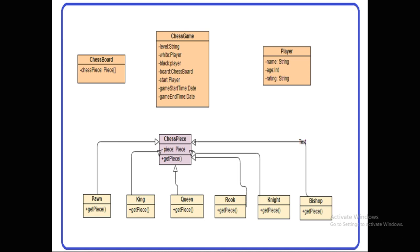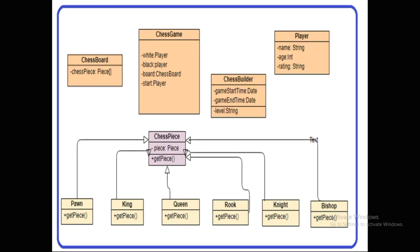In the diagram we have a ChessGame class which has many parameters: chess level, white player, black player, chess board, the player which will start the game, game start time, and game end time. This ChessGame is a complex object, so we can use Builder pattern here. We'll create a Builder class using only the extra parameters of the ChessGame, and the ChessGame class will have only the mandatory parameters.